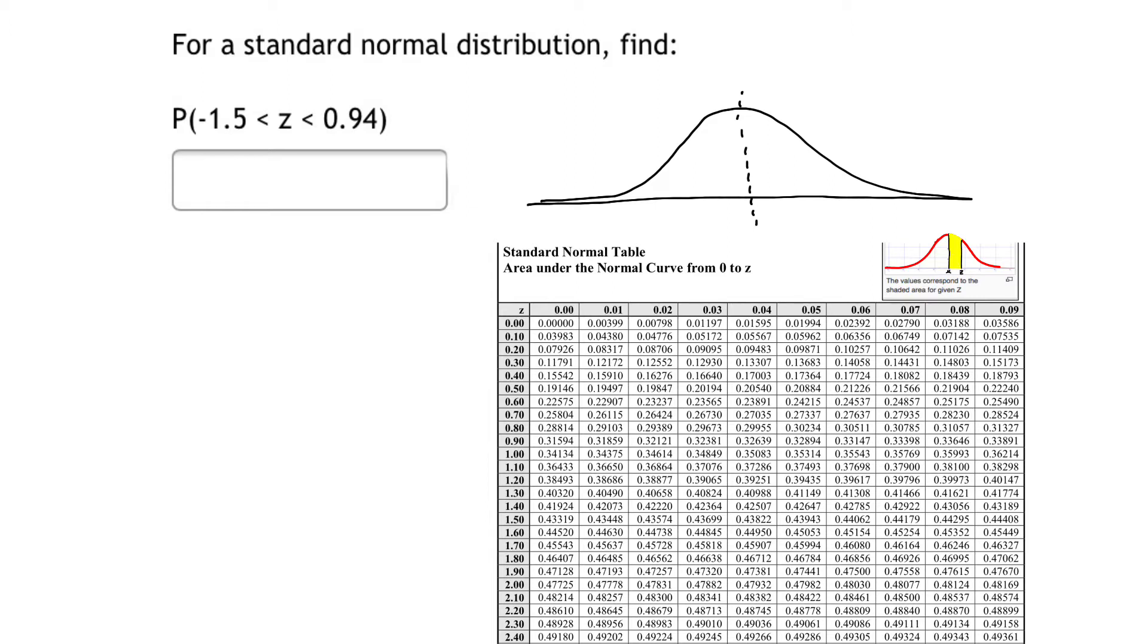What is z = -1.5? That means we are looking for -1.5 standard deviations away from the mean. Somewhere around here, we'll have -1.5. We are looking for the value of the area under the curve between -1.5 and 0.94, which is almost one standard deviation on the right side.